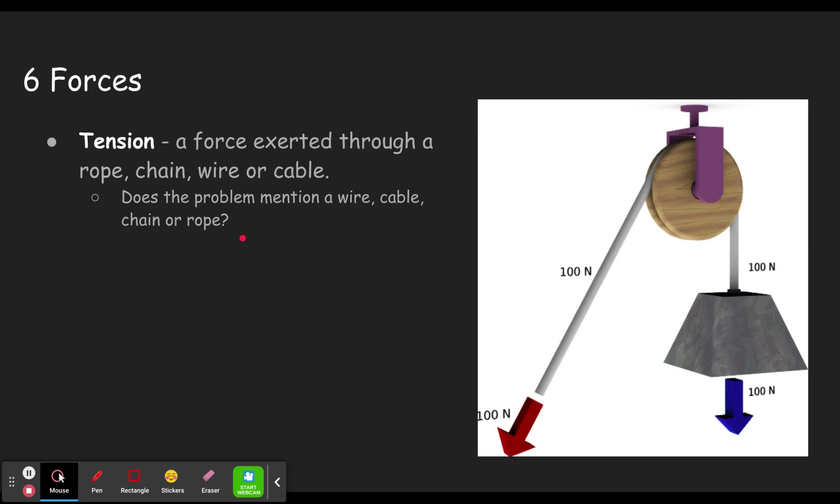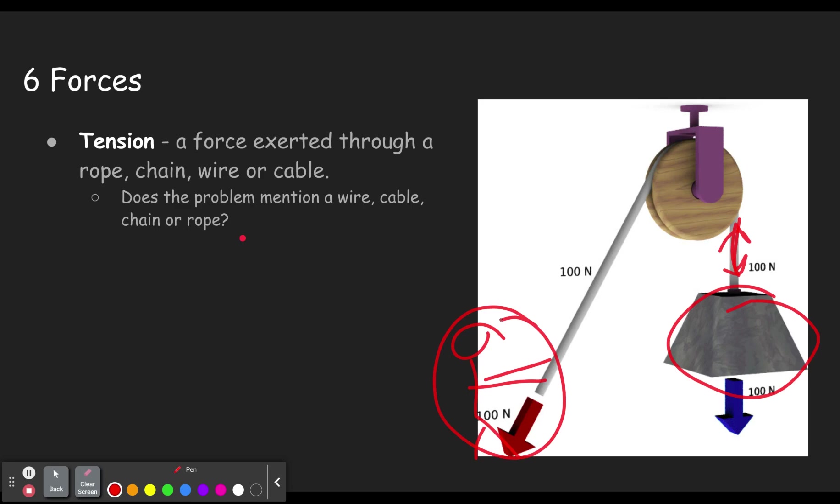Now one tricky thing is, if there is a person here pulling on the rope, and they say what forces are on this, then it would be tension, tension of the rope pulling on it. But we would not pretend like this person is pulling on the object. That'll come up in the next one.